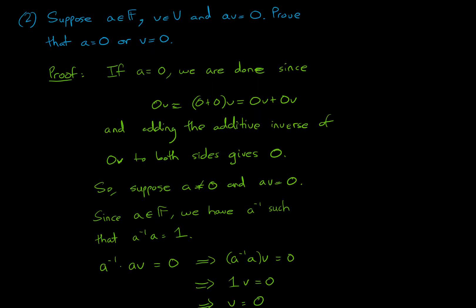Question two: suppose a is in a field and v is in a vector space and av = 0, prove that a = 0 or v = 0.